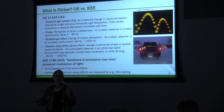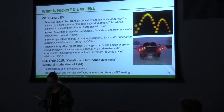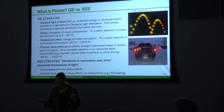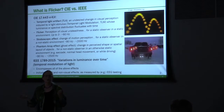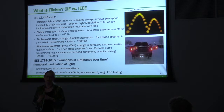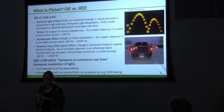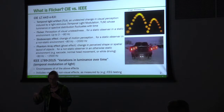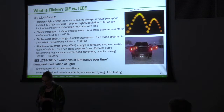One is an overarching term called temporal lighting artifacts, which is an undesirable change in perceived light level induced by temporal light modulation. What they're trying to do is separate the stimulus — temporal light modulation, that's oscillating light coming off a light source — from temporal light artifacts, which is the perception of the change in lighting.